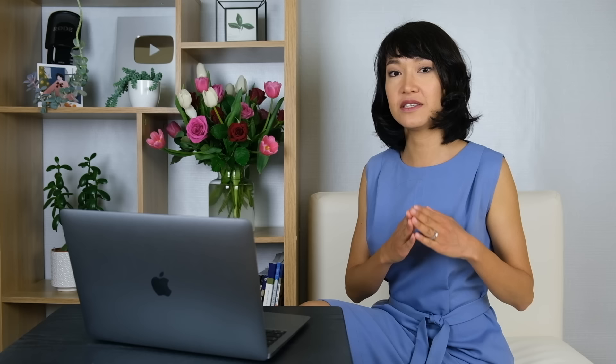Let's begin with that very simple linking word 'but.' We use 'but' to contrast two statements — we're simply saying that there is a difference between them. For example: 'I like comedies but I don't like horror films.' Now there are several linking words that you can use instead of 'but' in Task 2.